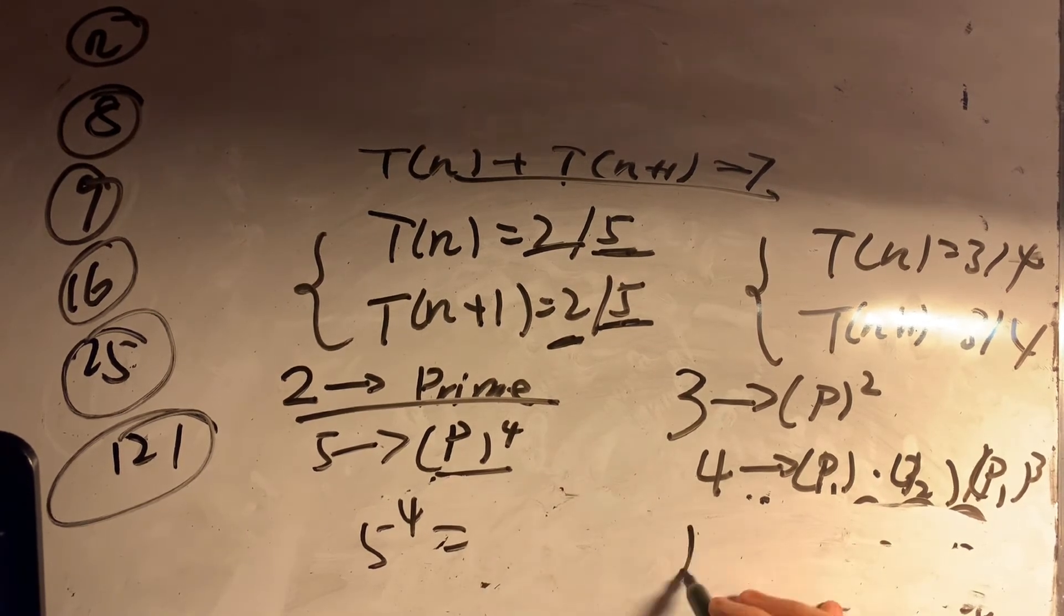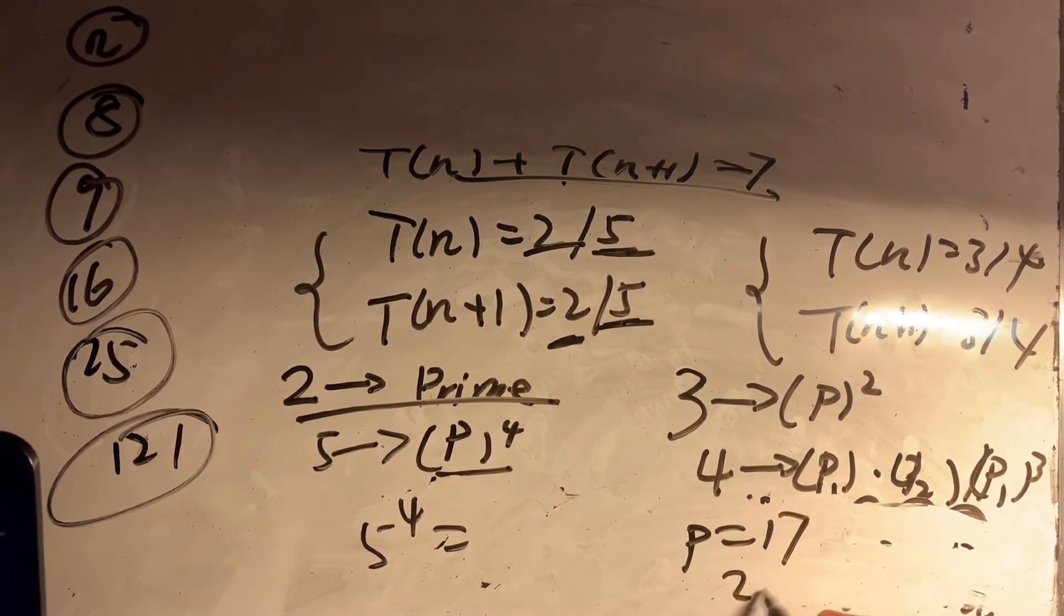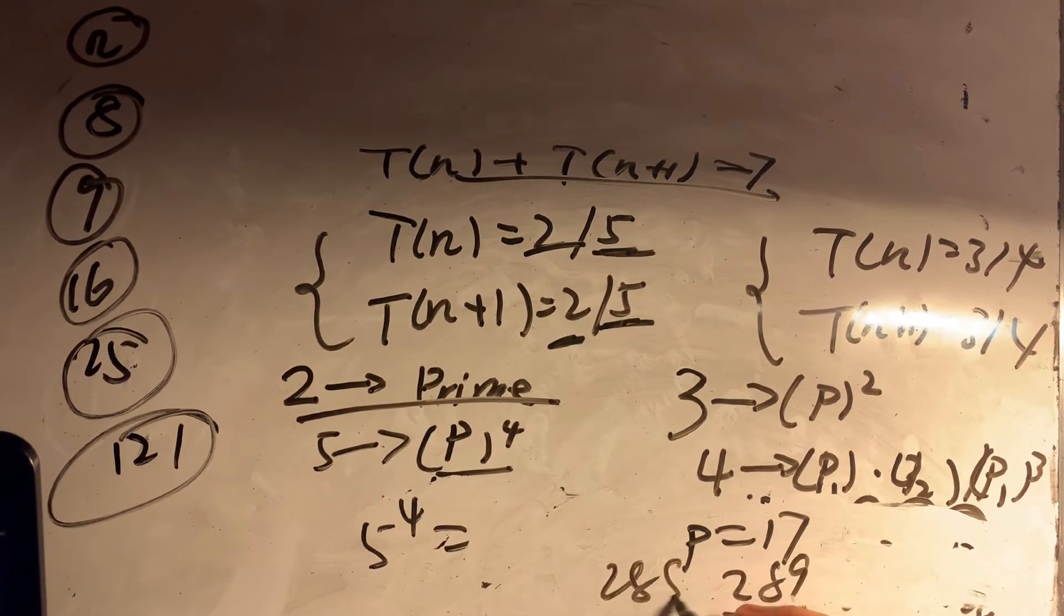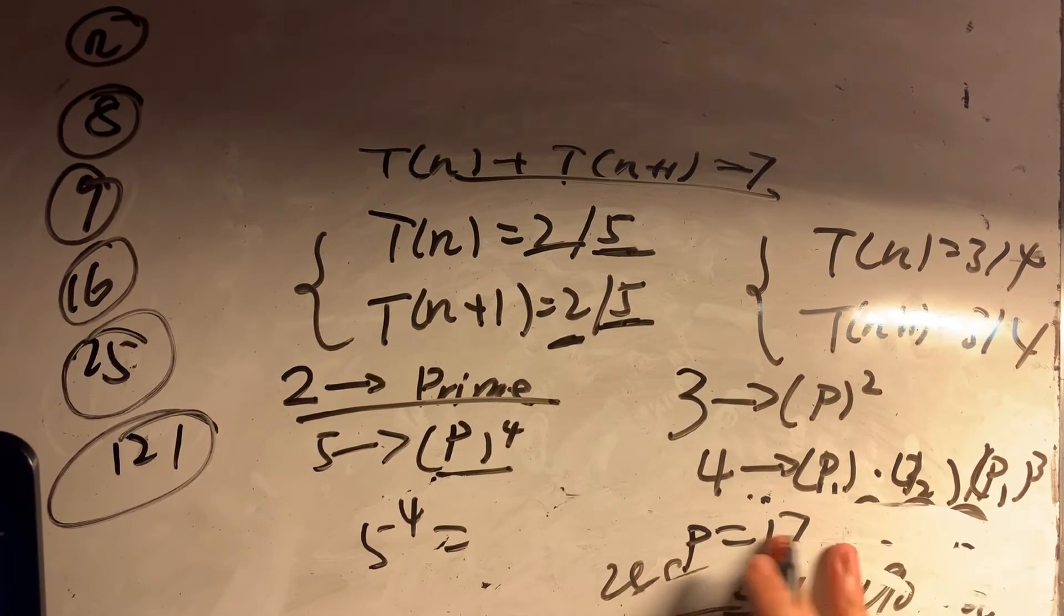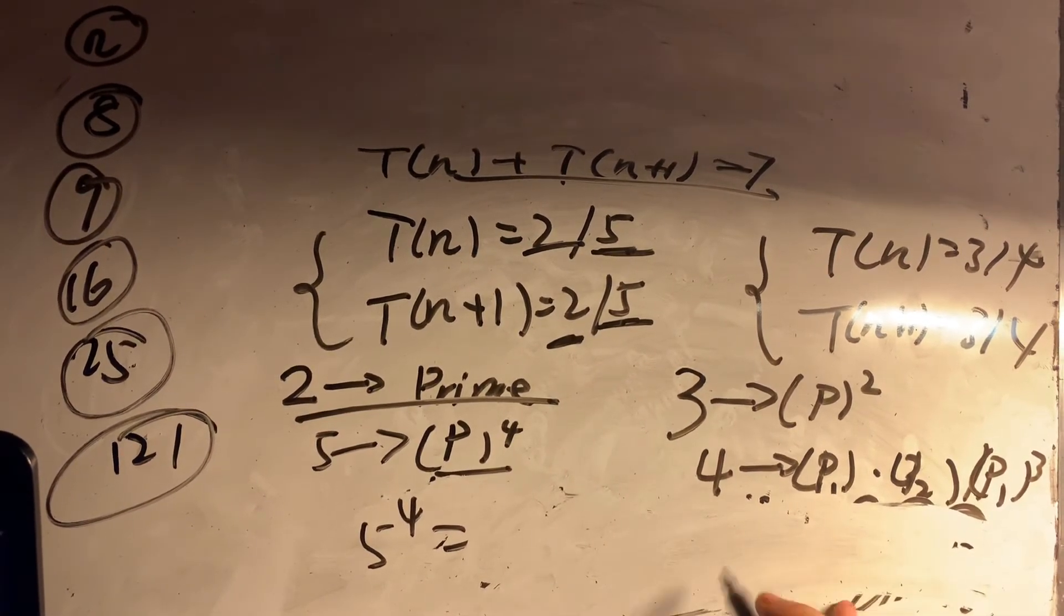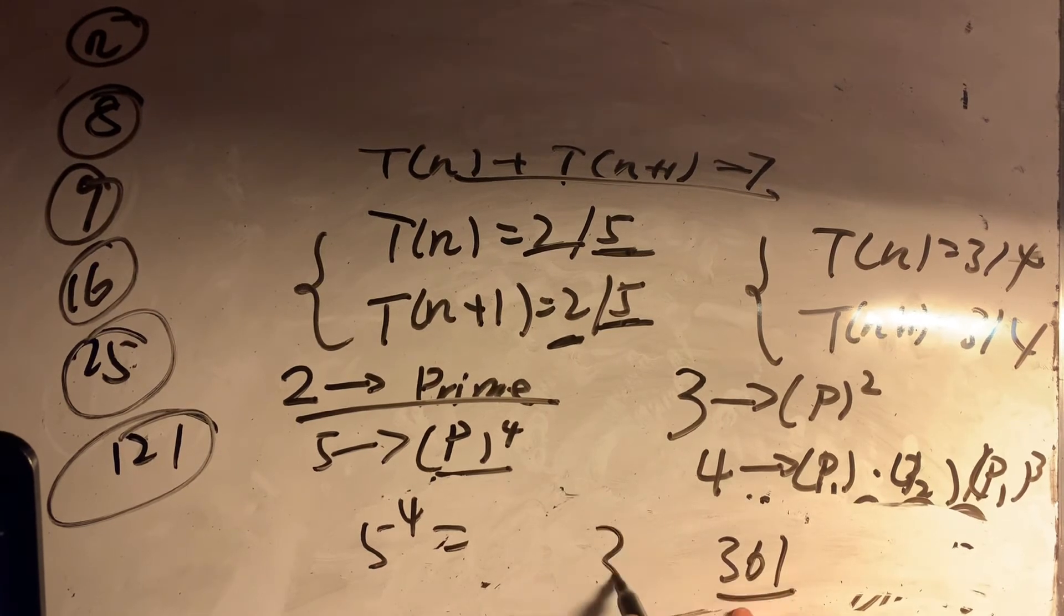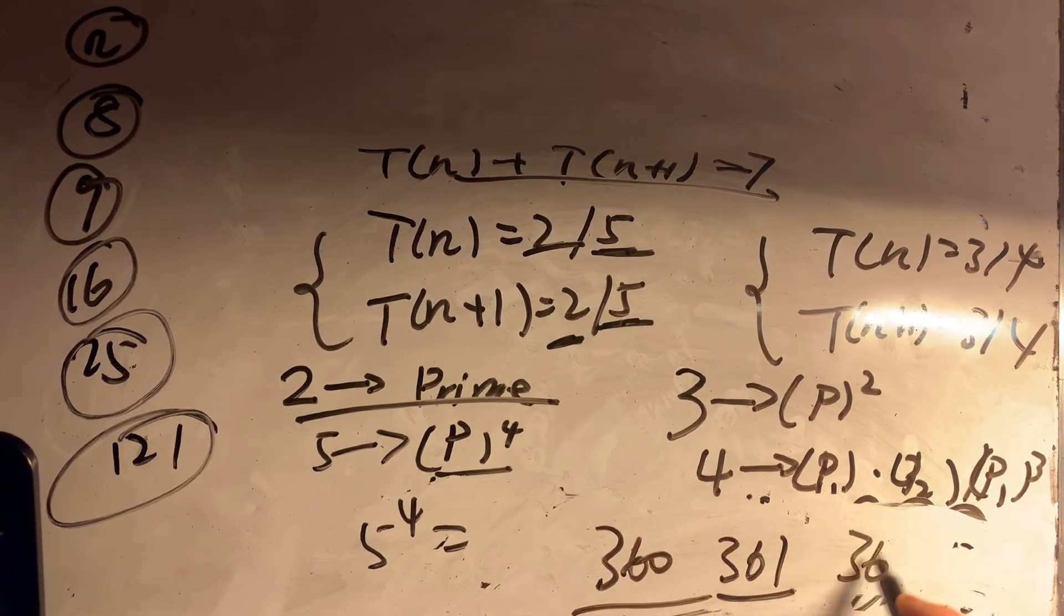Now let's try the next number, P is equal to 17. So 289, 288, 290. 288 has more than 4 divisors, 290 also has more than 4 divisors. Let's try the next number, 361. The left number is 360, and the right number is 362.